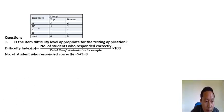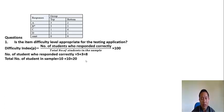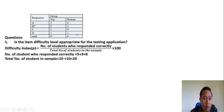Looking at the table, the number of students who responded correctly is 5 plus 3. Five students from the top group got the correct answer, and 3 students from the bottom group got the correct answer, giving us 8. The total number of students in the sample is 10 plus 10, which equals 20.